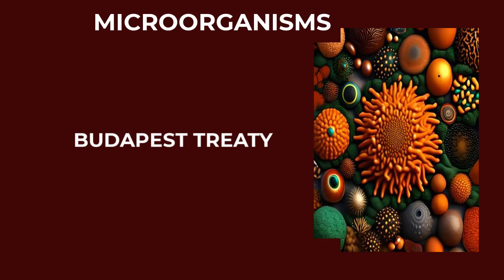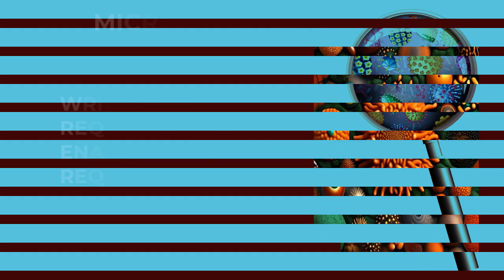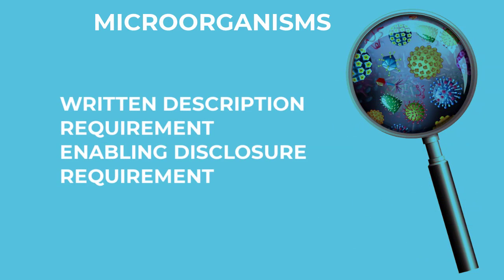If people want to replicate the invention, they can do so through what we call the written description requirement, the sufficiency requirement, or the enabling disclosure requirement. This requirement requires an applicant who files a patent to disclose the invention in such a way that any person skilled in the art should be able to make that invention without recourse to the inventor — without having to ask or clarify anything with the inventor.